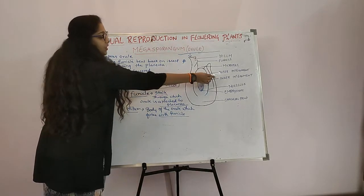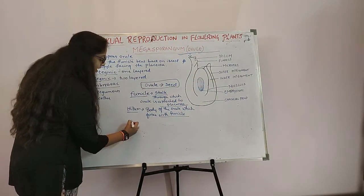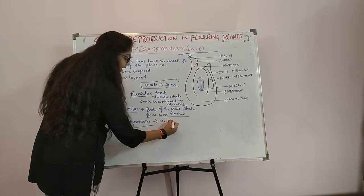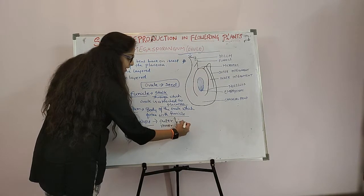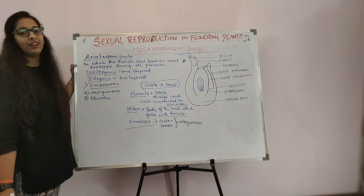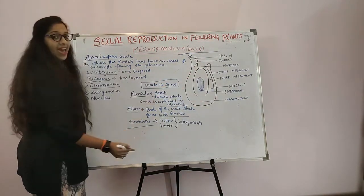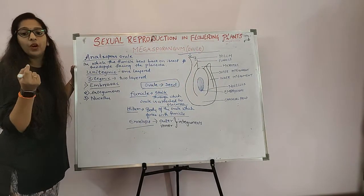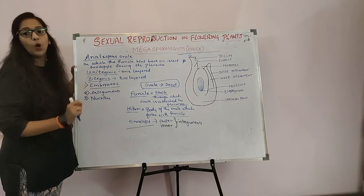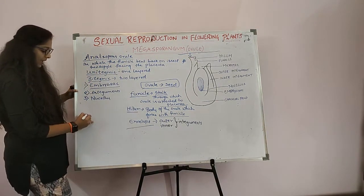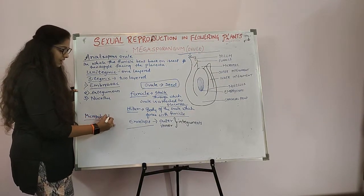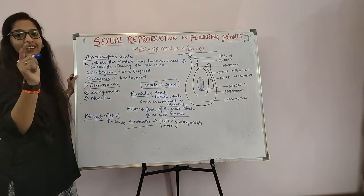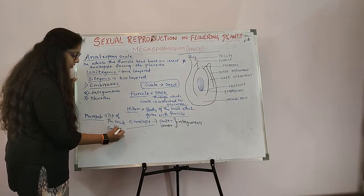The ovule has two envelopes called the outer integument and the inner integument, which encircle the ovule. The integuments encircle the ovule except at the tip. At the tip of the ovule there is a small opening, and that is called the Micropyle.